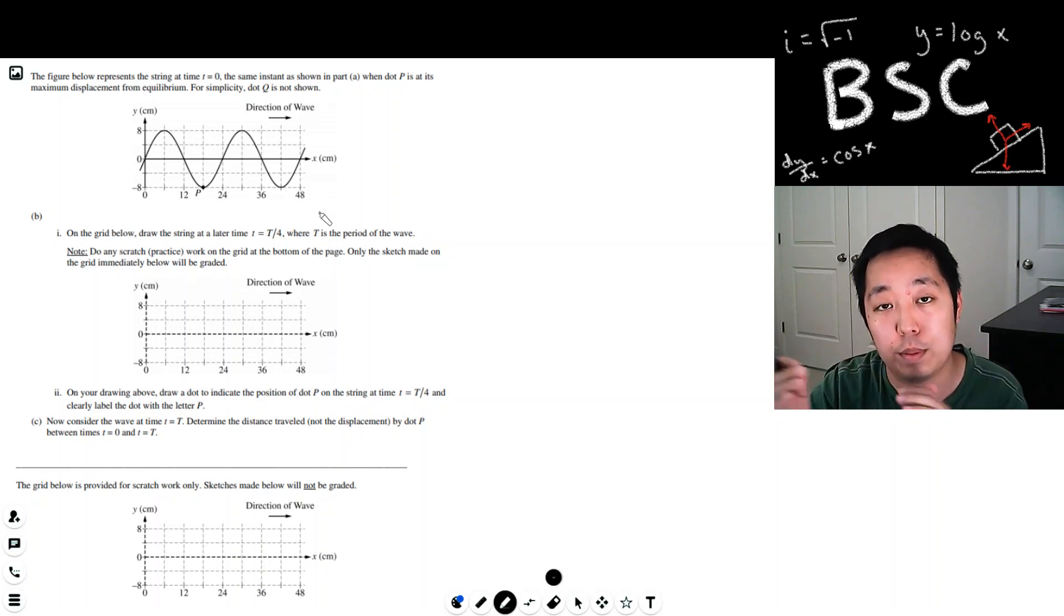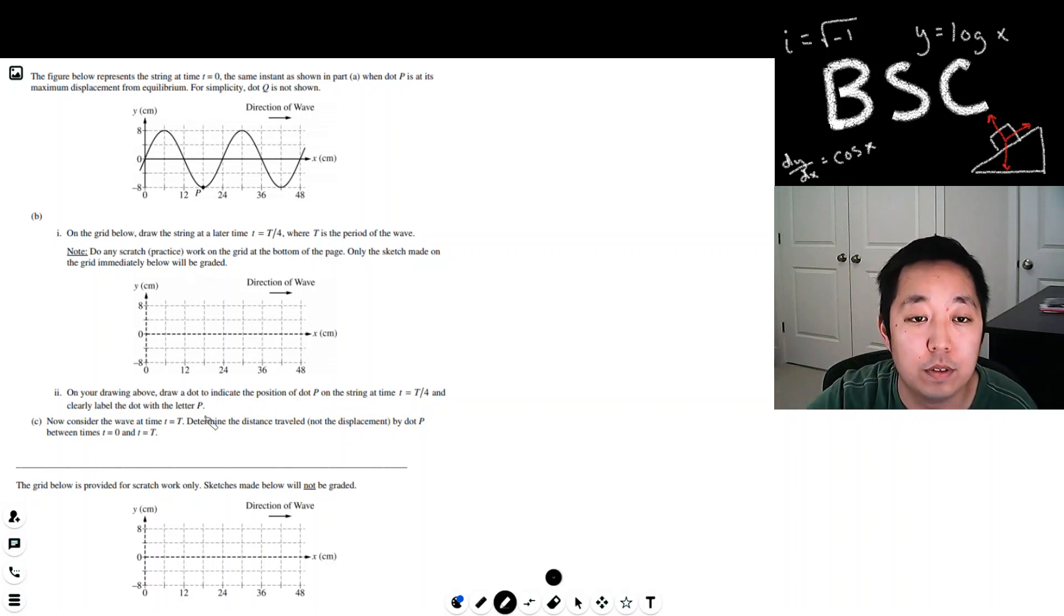But T over four means it's going to move over one quarter of a wave. If you look at it, it's one, two, three, four. It's like four of these hash lines separating it. A quarter of a wave is going to be like up here with the peak. This peak is also going to be a quarter over to about there. And then we just kind of sketch. I'm just sketching the zeros.